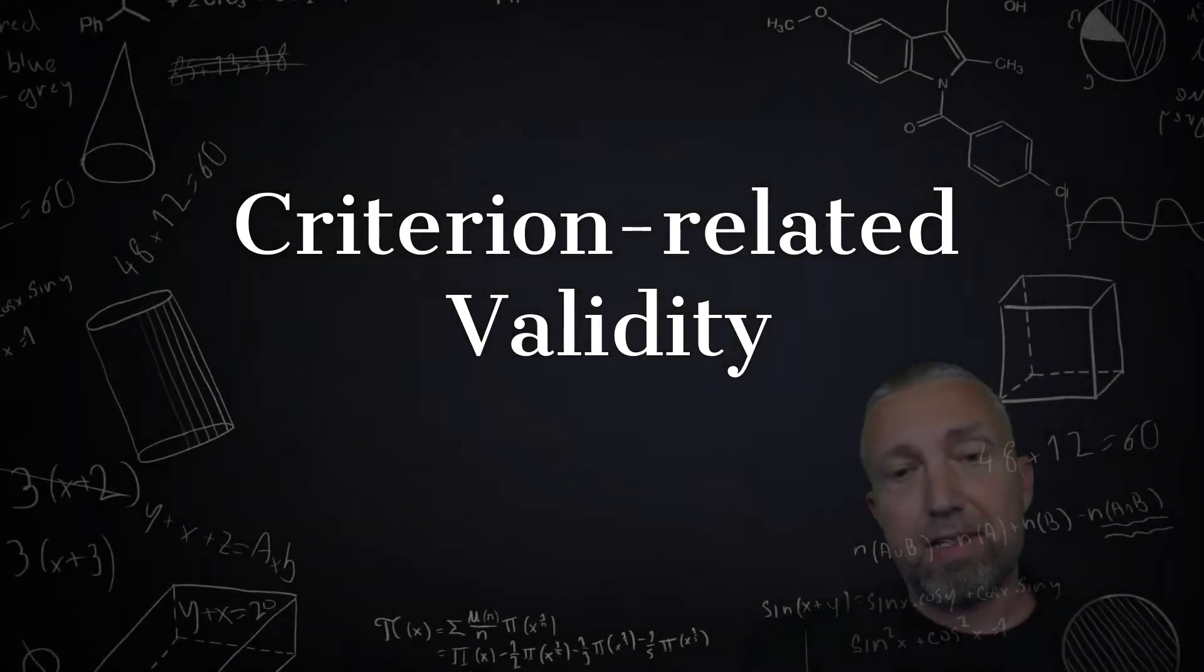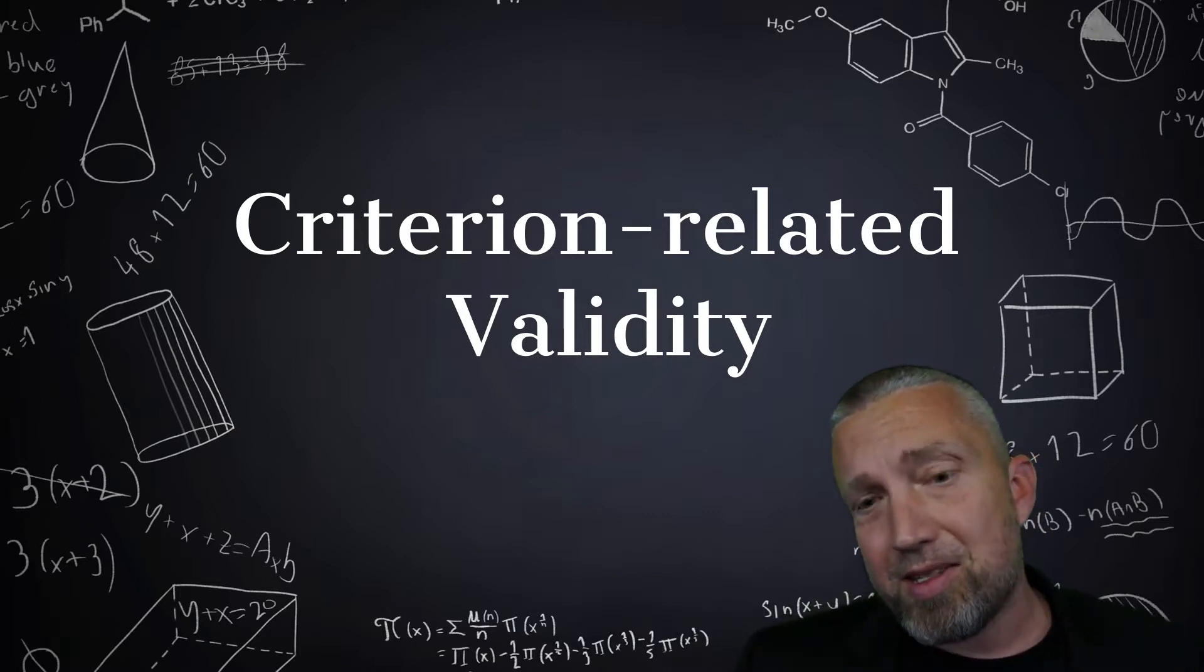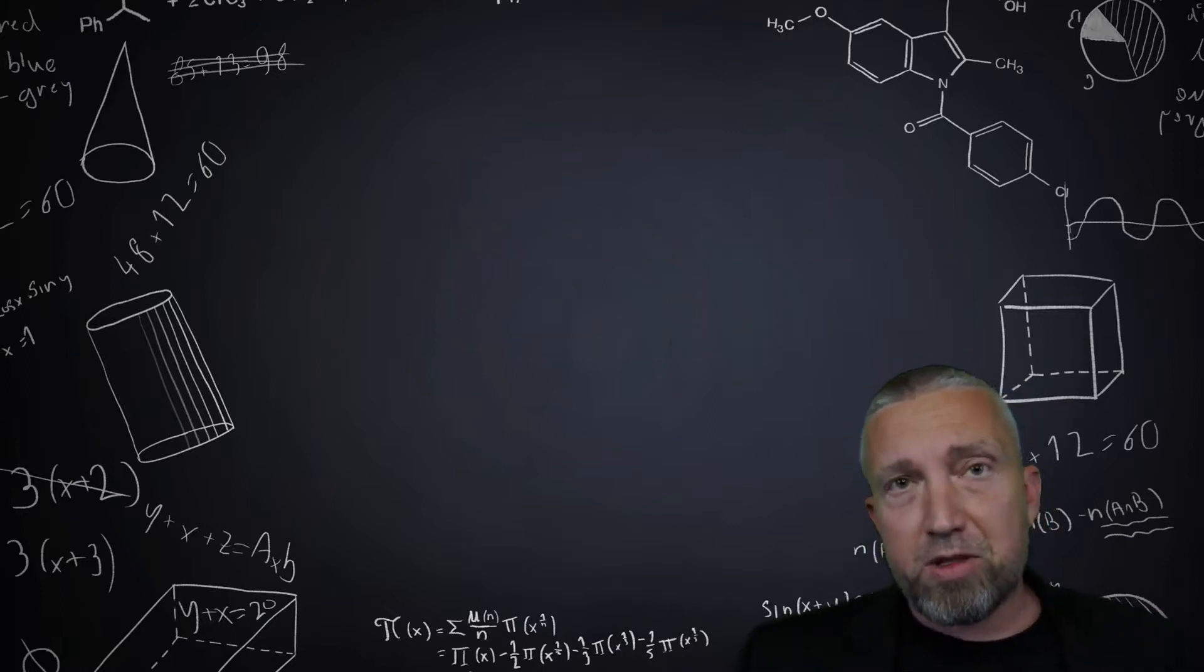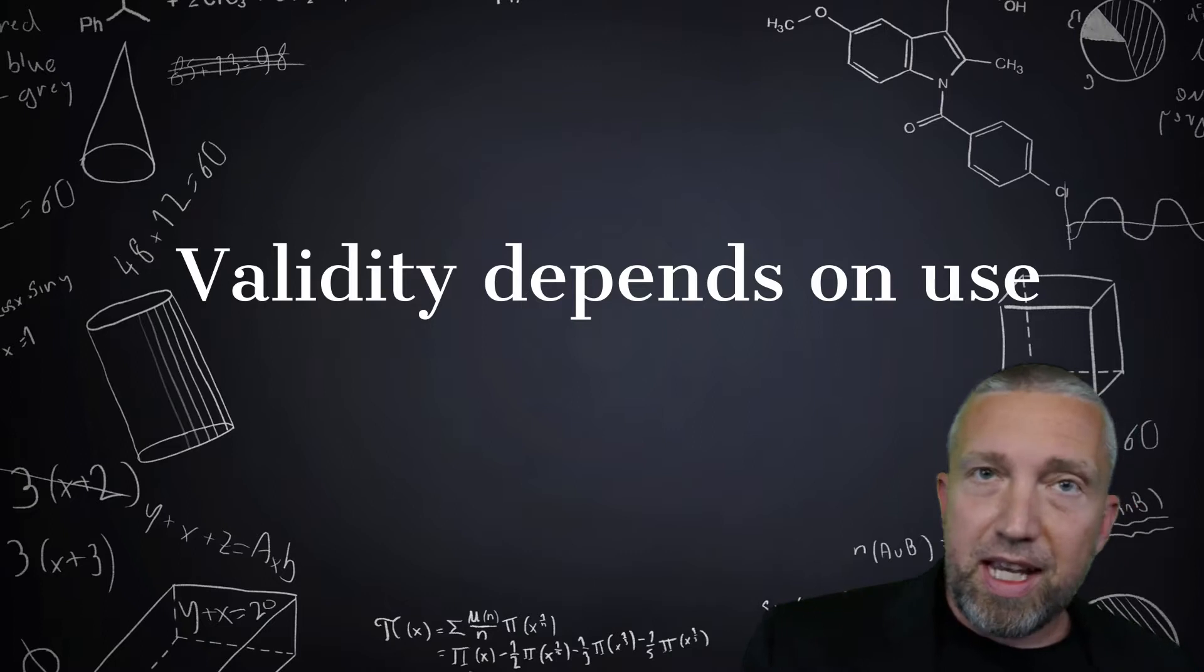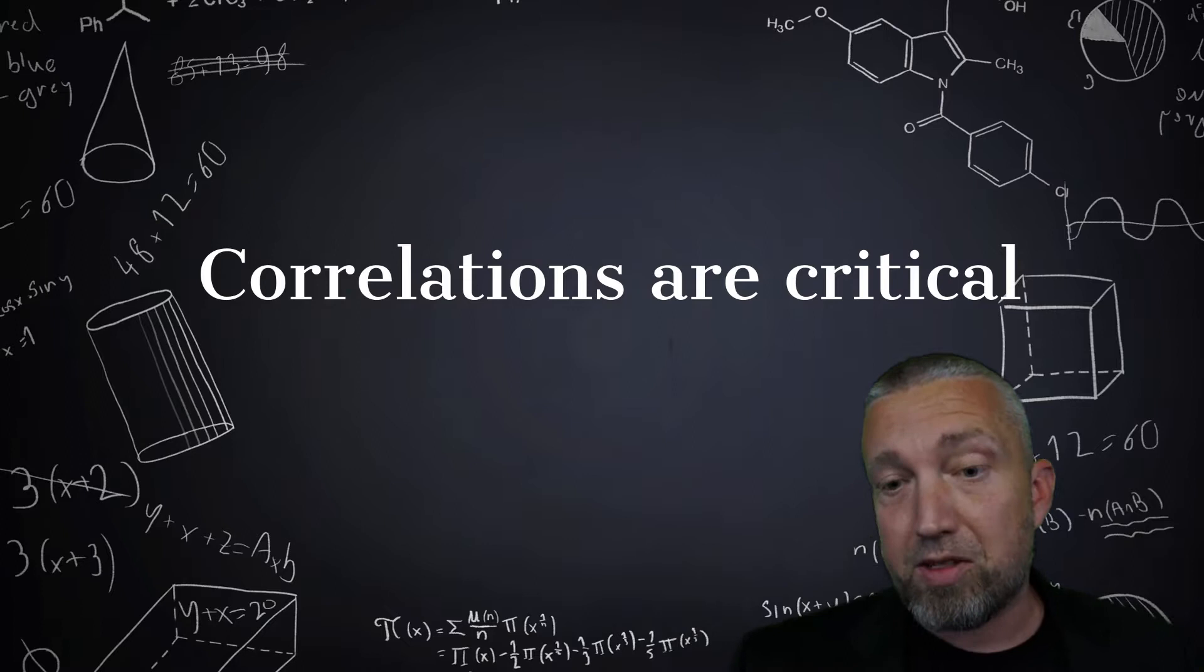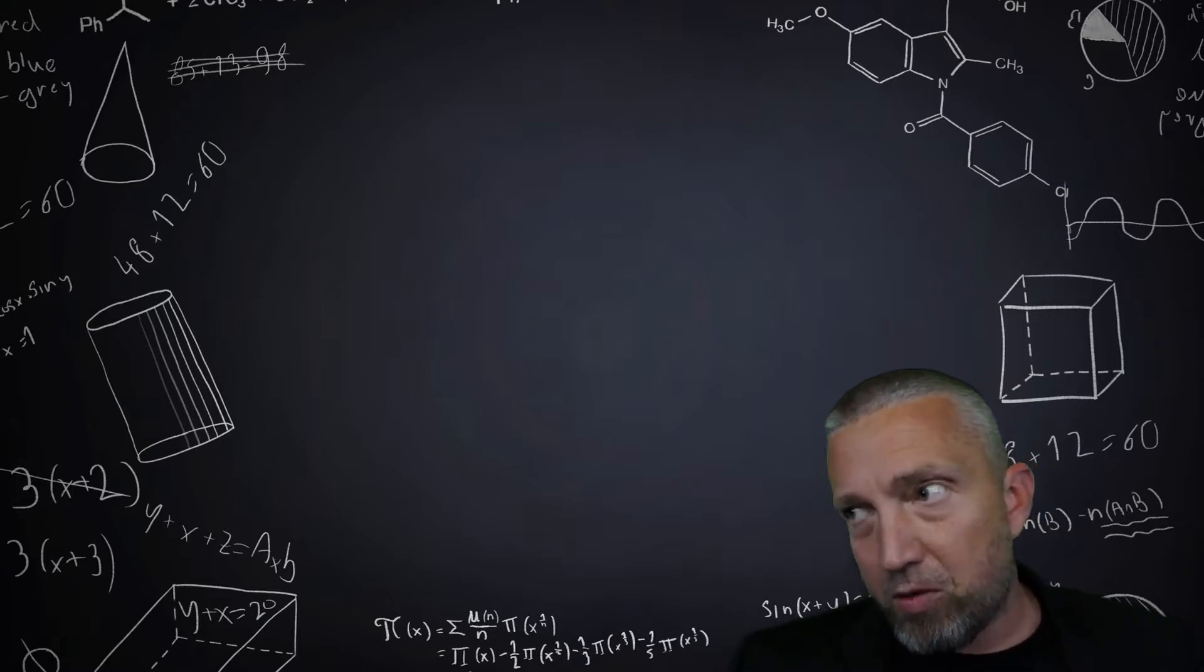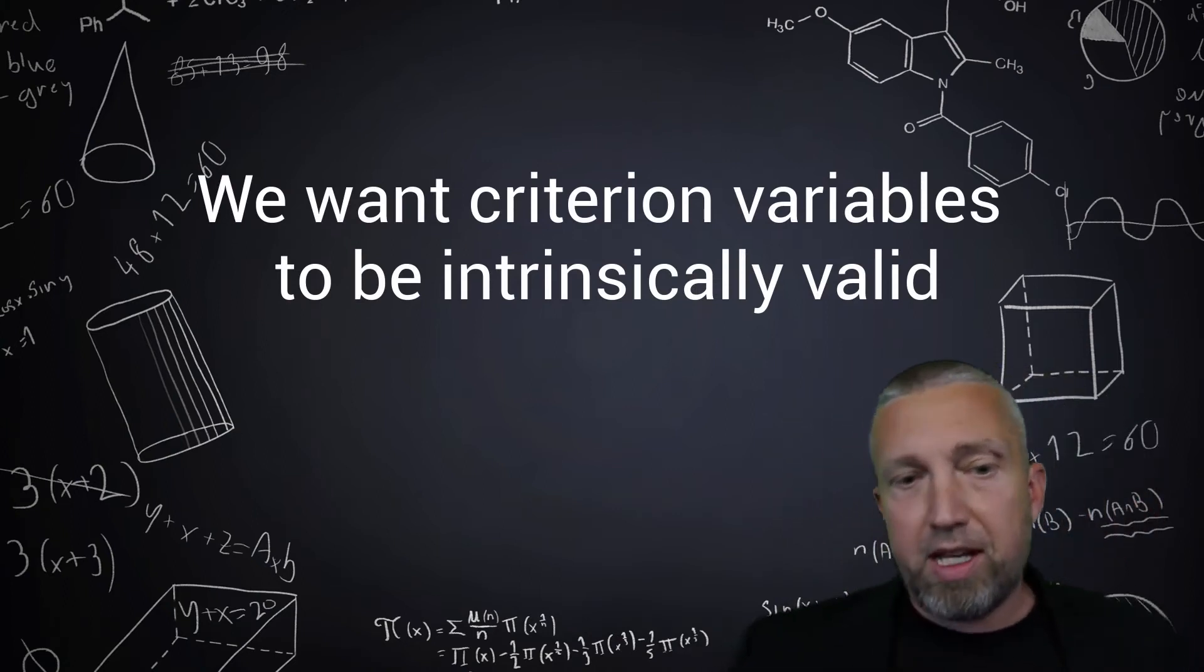Perhaps test A does a moderate job of predicting retention in a particular situation, such as for four-year universities, but maybe it doesn't do a great job at predicting retention at a two-year college. Even under this view, validity depends upon the purpose and use of a test. Under a criterion-based view, I'm solely interested in the relationship between my test scores and some criterion of ultimate interest, like job performance or school performance.